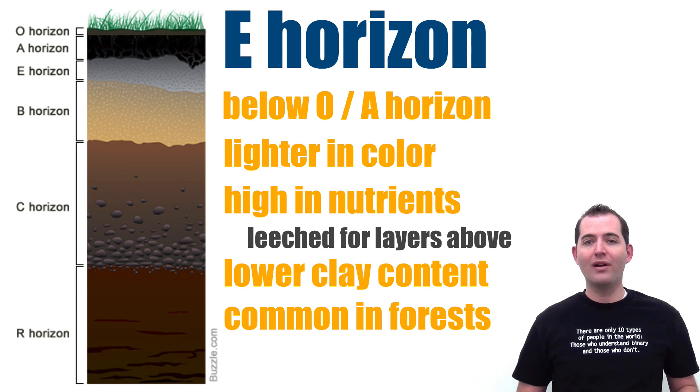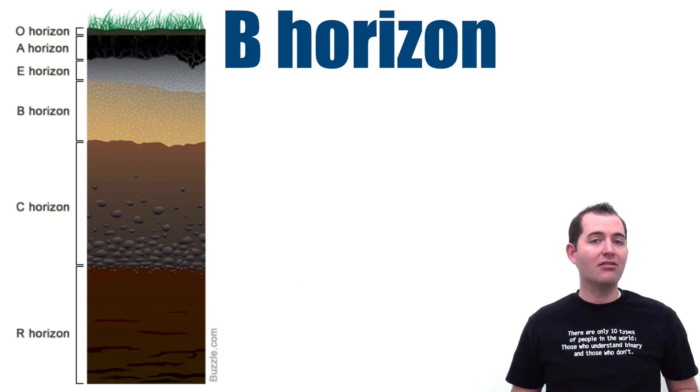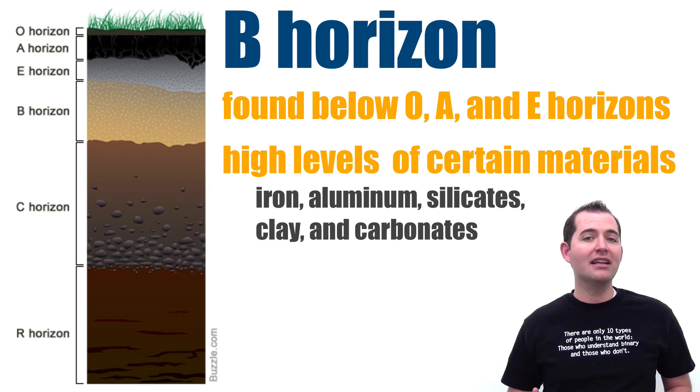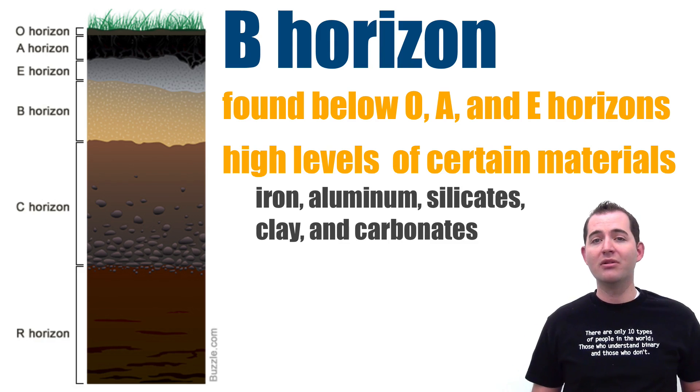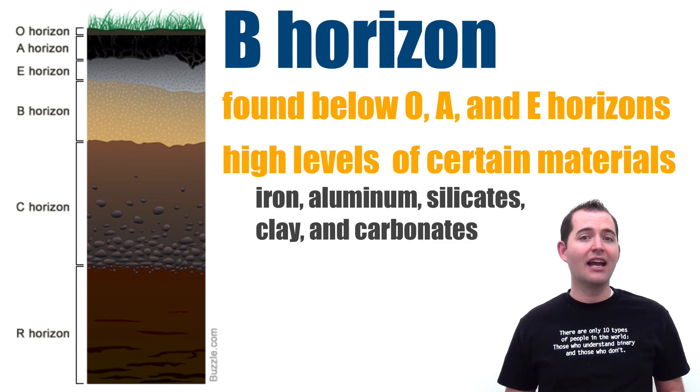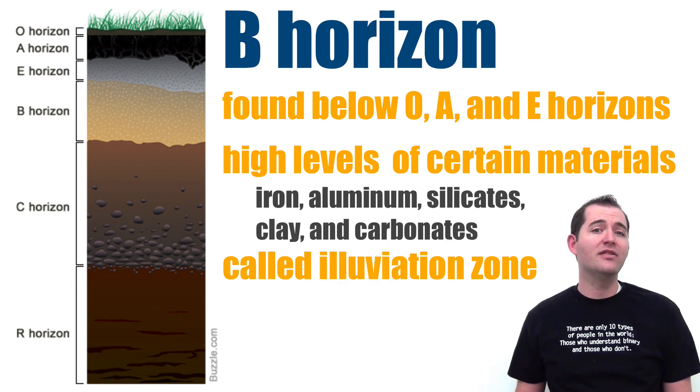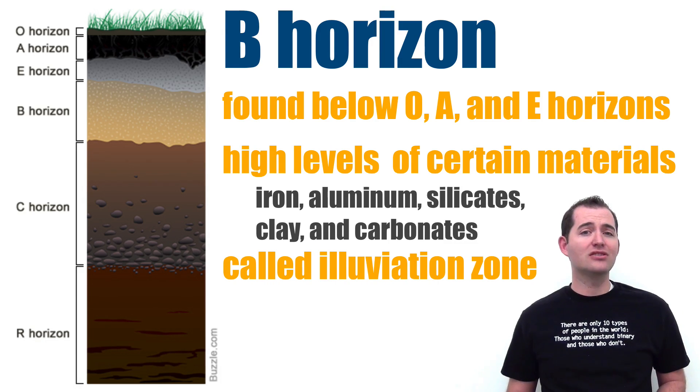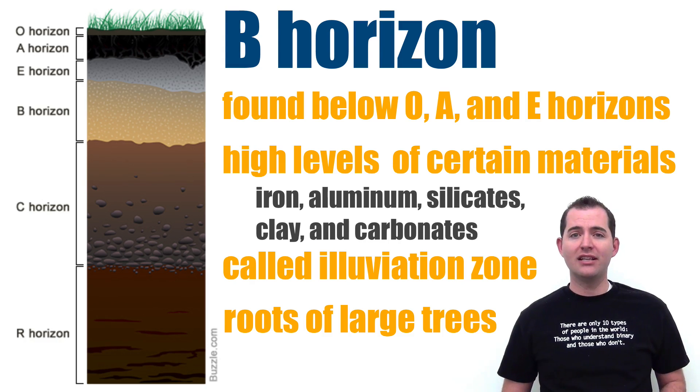B horizons are typically found below O, A, and E horizons. This layer may contain high levels of iron, aluminum, silicates, clay, and carbonates, and it is often called the alluviation zone because of the high concentration of minerals. Horizon B is also where the roots of large trees end.